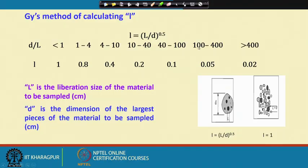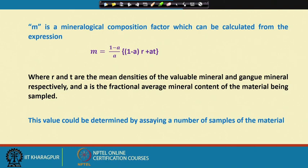From this set of conditions I can find the value of small l, but the important criterion is that I must have prior information of the liberation size. If the particle has already been liberated — meaning l equals d — then small l equals 1. So we have now explained how to obtain F, G, and L. Now it is M.